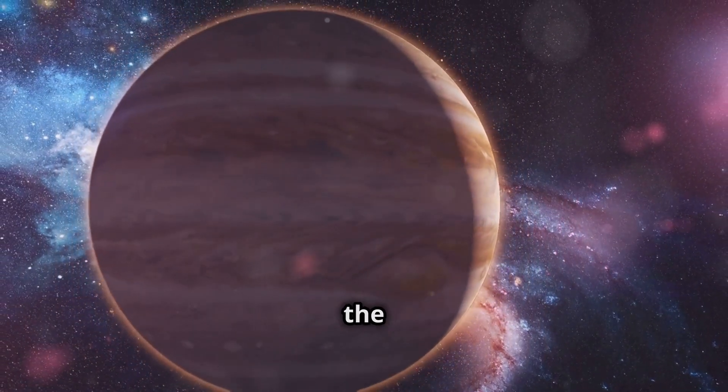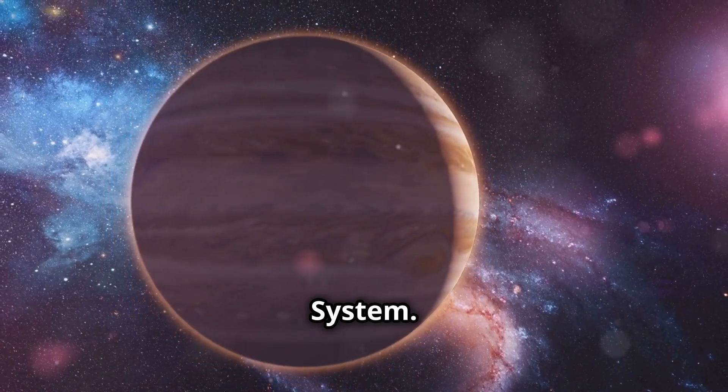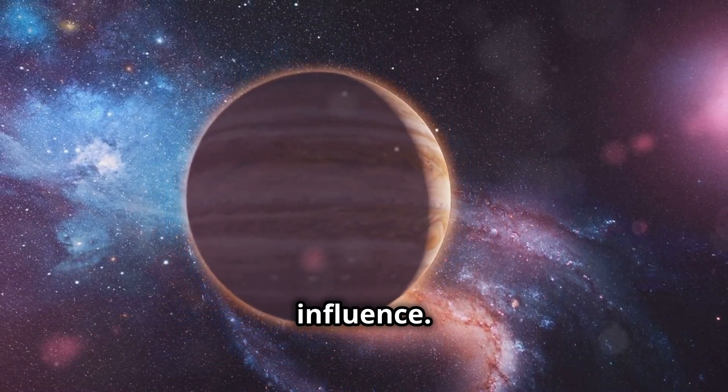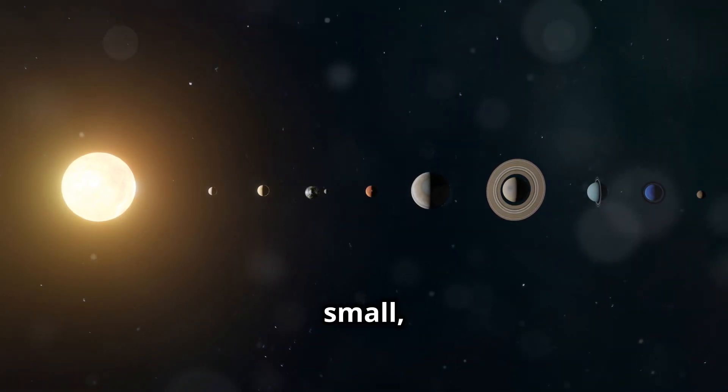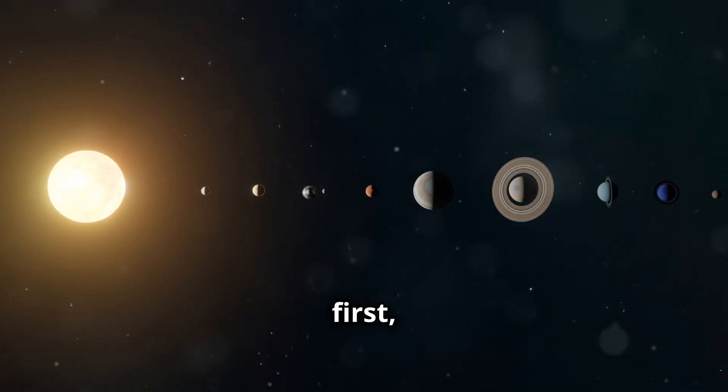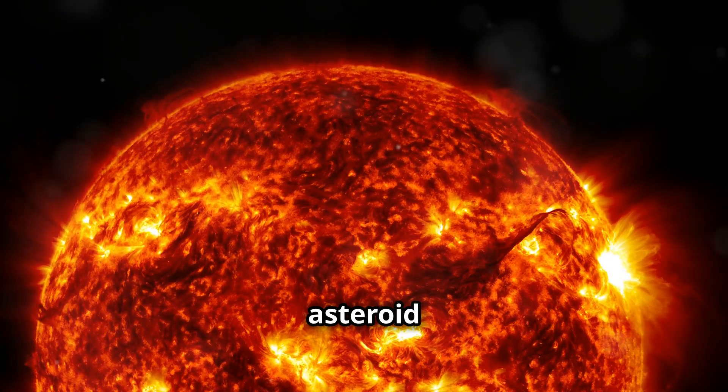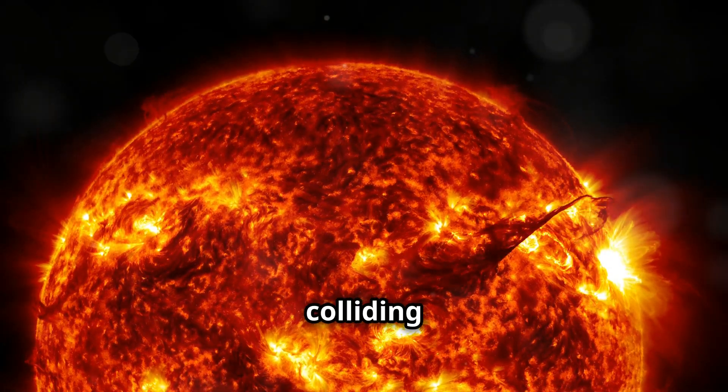Jupiter, for example, has a huge gravitational influence. Some of these changes would be small, almost imperceptible at first, others could even end life on Earth. Imagine an asteroid being diverted from its path and colliding with our planet.